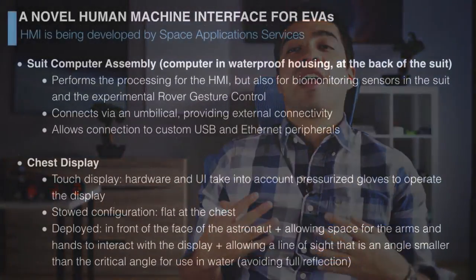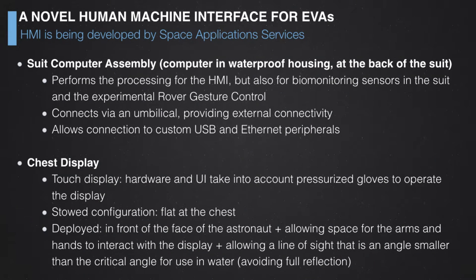The human-machine interface has three main form factors being tested during analog trials to determine the best way to convey information. The first is the chest display, which is essentially an iPad-sized screen. Since the astronaut wears bulky gloves, it requires very large buttons and special technology to allow glove operation on a touchscreen. In stored configuration it lies flat on the chest, then deploys in front of the astronaut's face, allowing interaction just like an iPad.